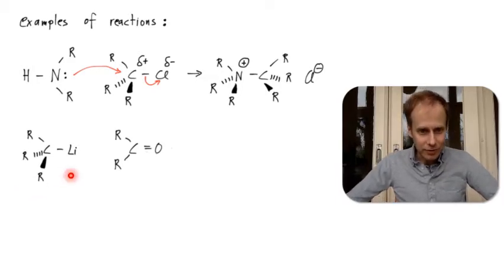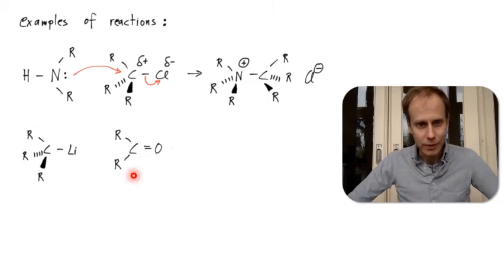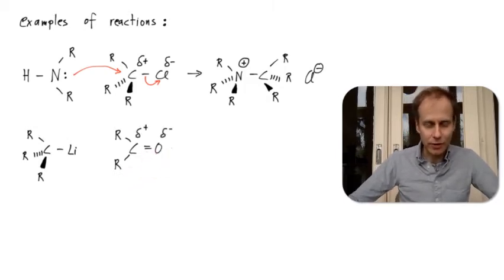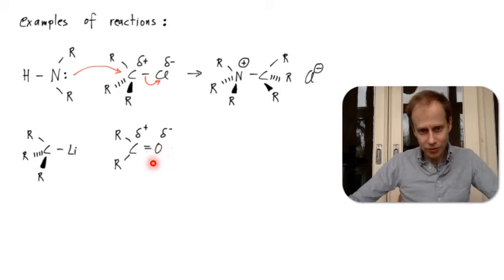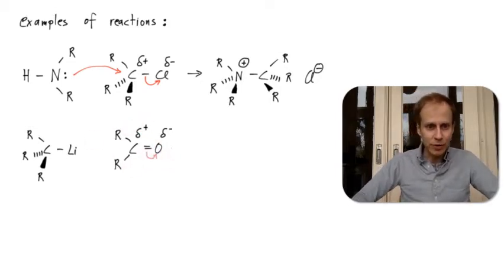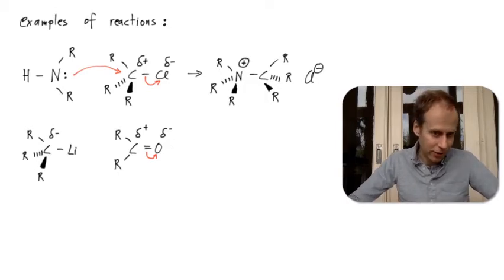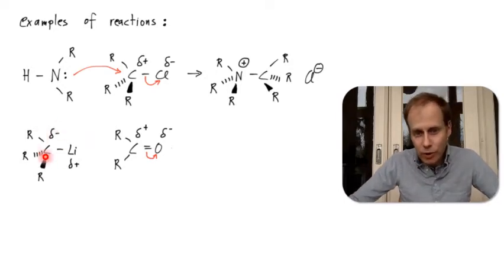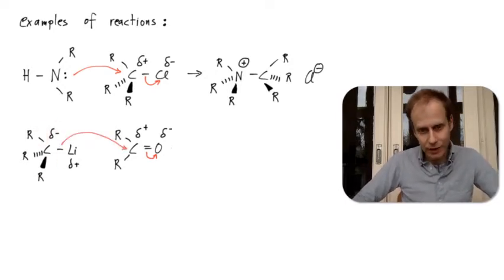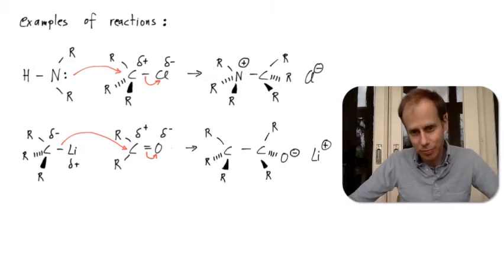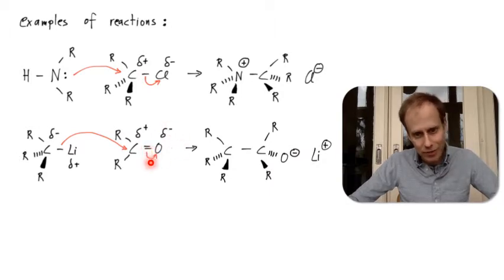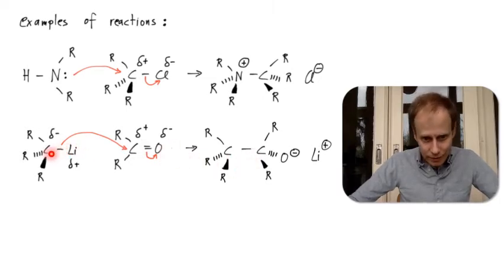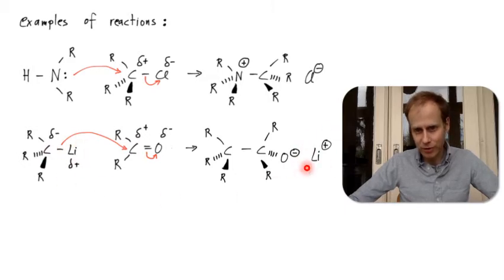Here's another example: we have a lithium compound and a ketone. The partial positive charge is on the carbon because of the electron withdrawing of the oxygen, so this is our electrophile. Due to the partial negative charge on the carbon from the less electronegative lithium, this is our nucleophile. The nucleophile attacks the electrophilic side, leading to the formation of a product where there's a negative charge on the oxygen — the pi bond has become a lone pair on the oxygen — and the lithium splits off as a lithium cation.